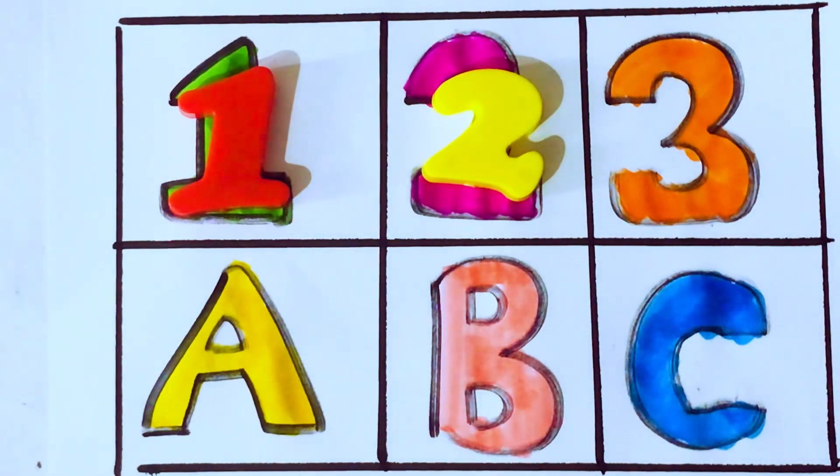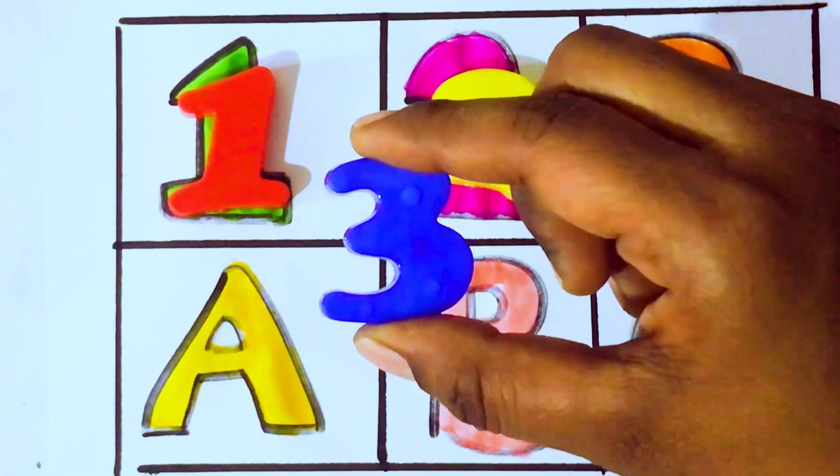2 after 3. Which number kids? 3. T, H, R, E, E, 3.